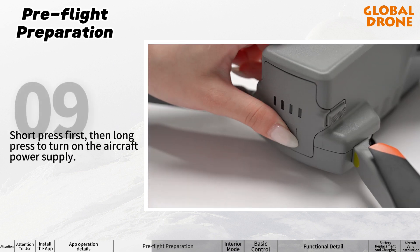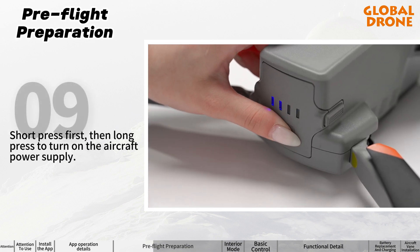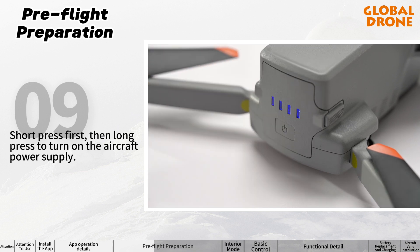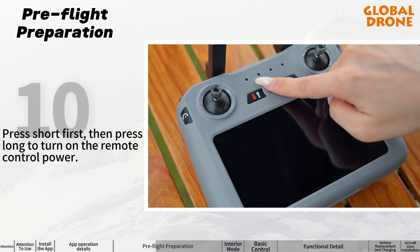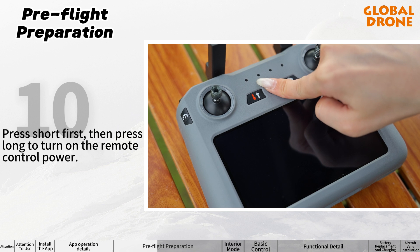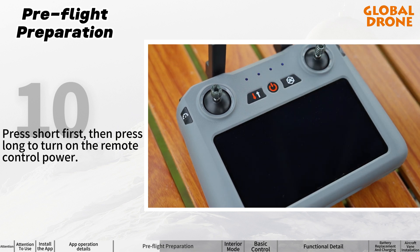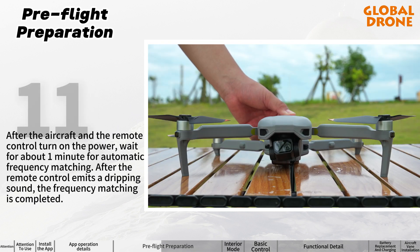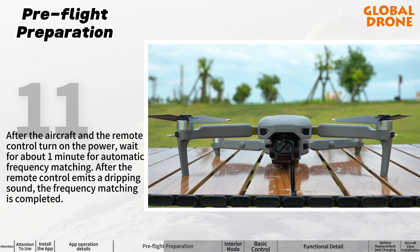To power on: short press first, then long press to turn on the aircraft power supply. Short press first, then long press to turn on the remote control power. After both the aircraft and remote control are powered on, wait about one minute for automatic frequency matching. After the remote control emits a dripping sound, frequency matching is completed.